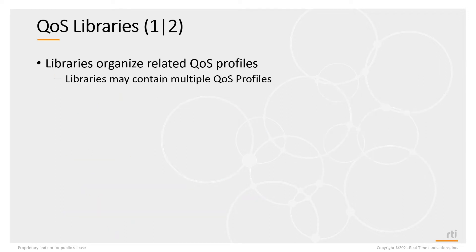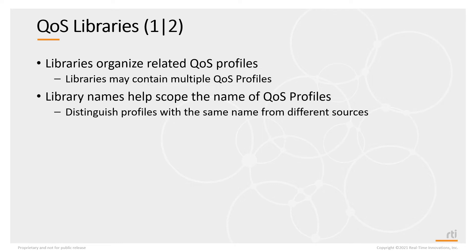QoS libraries help to organize QoS profiles — a library can contain multiple QoS profiles. What they fundamentally do is scope the name of a QoS profile. You could have the same QoS profile name used in different libraries, but by using the library name you can distinguish one profile from another.